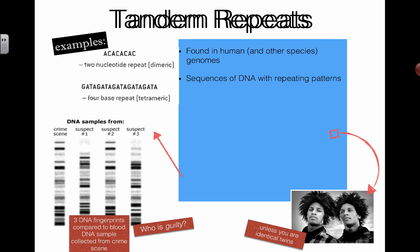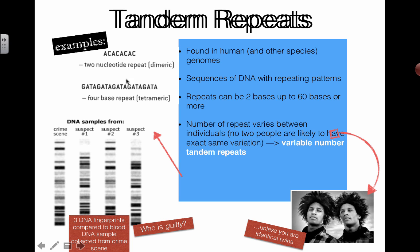Tandem repeats are found in human genomes and in other species as well. It's a sequence of DNA with repeating patterns. We've shown two letters repeating or four letters repeating, but there can be 60 bases or more repeating as well. The number of repeat variations that people have varies, and no two individuals have the exact same patterns. In your genome there probably is a section with a bunch of ACACACs, in mine as well, but the locations and lengths of these may vary. This actually makes people kind of unique, and we can use that to our advantage.